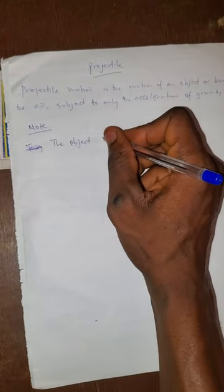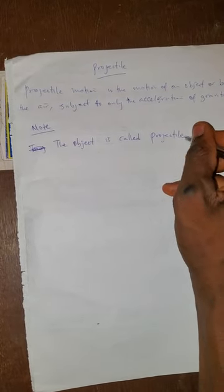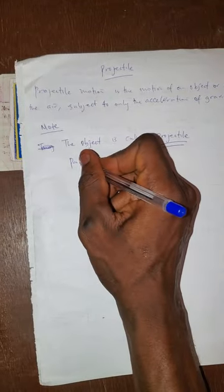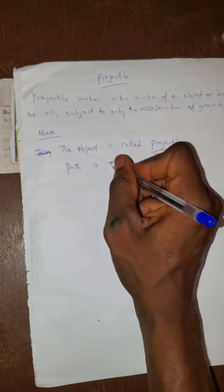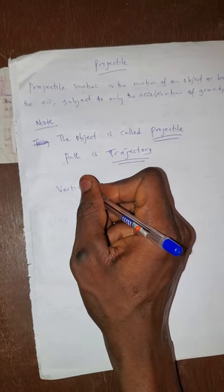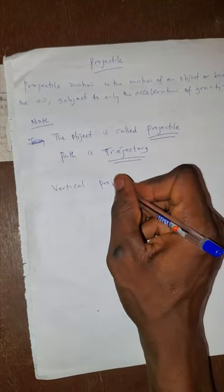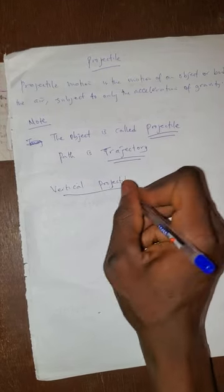The object that is projected is what is called a projectile. The path at which that object passes is called the trajectory. Under this topic, we'll be looking at projectile motion in two aspects: vertical projectile and horizontal projectile.